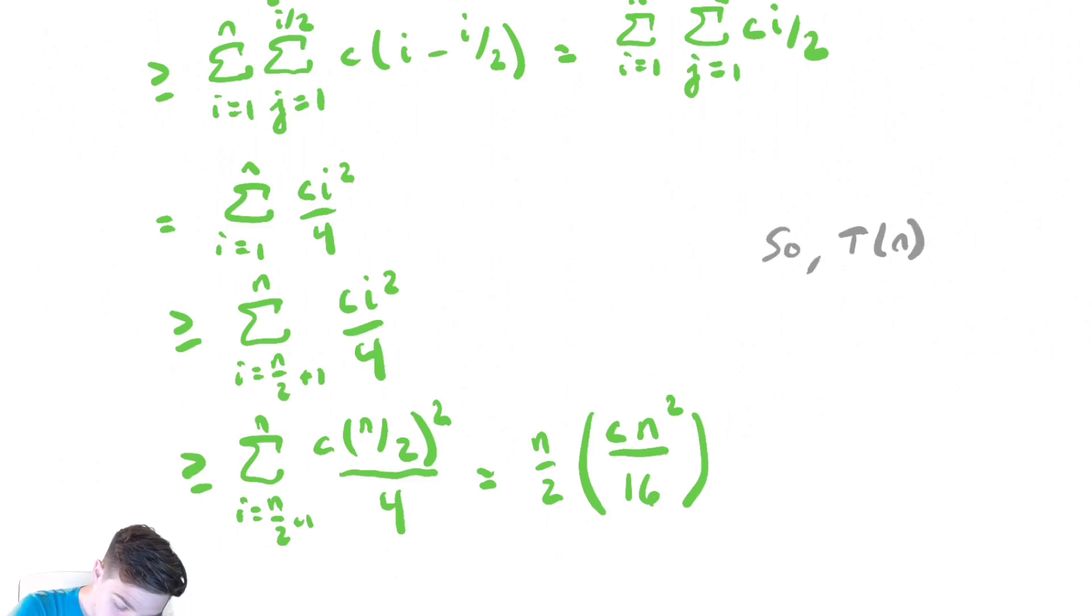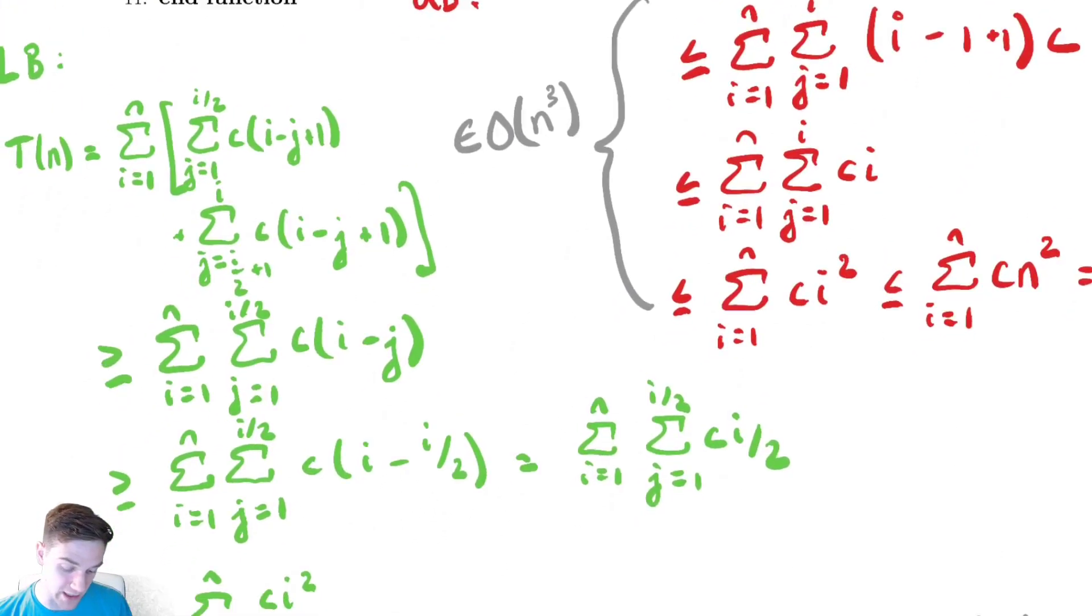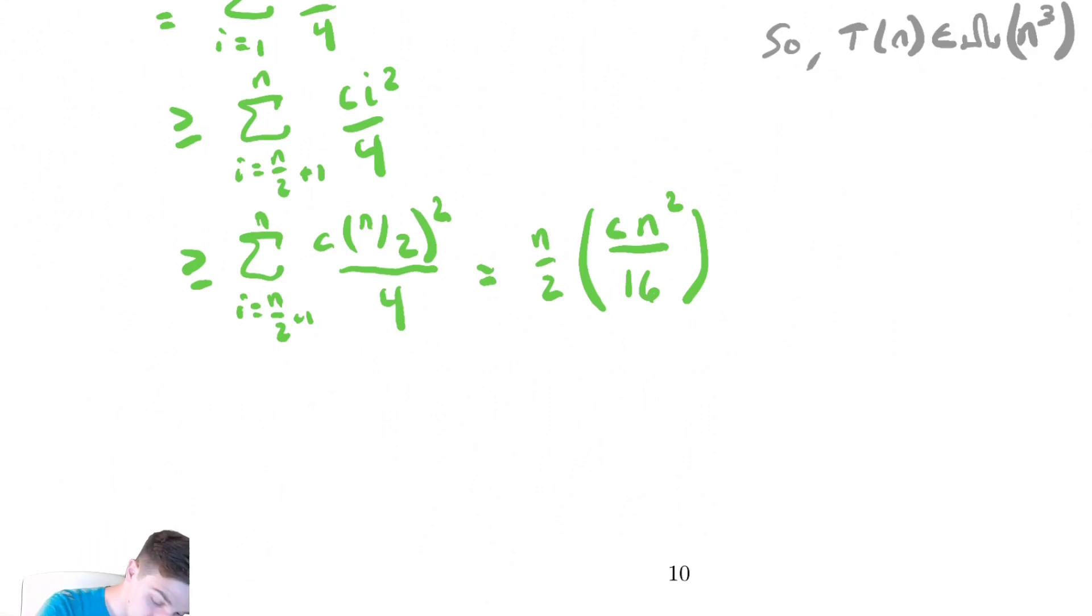So t of n is in big omega of n cubed. It's in big omega of n cubed and big O of n cubed, so it must be in theta of n cubed. That's my conclusion. So t of n is in theta of n cubed. However you choose to analyze these is up to you, and I will not necessarily care how you do it. I will encourage you to use the bounding methods, because they tend to be more universally helpful. But whatever technique you prefer, you are allowed to use for problems like this.